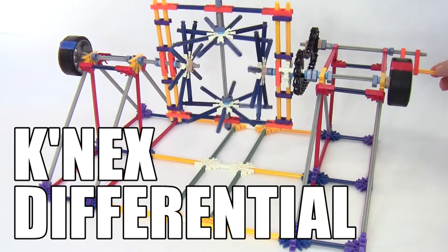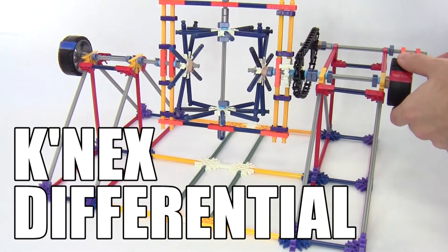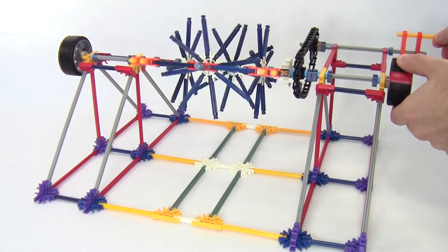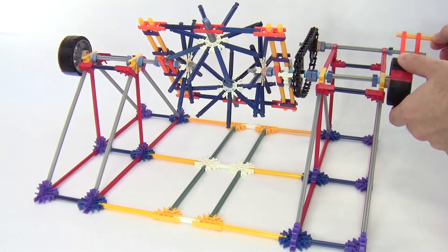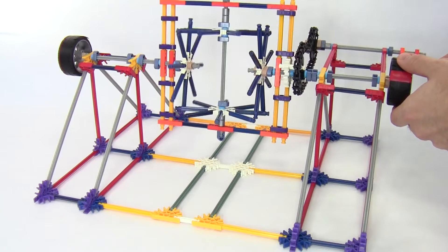A differential is a mechanism that lets two wheels on the same axle rotate at different speeds. This helps a car go around a turn where the outer wheels must rotate faster than the inner wheels.